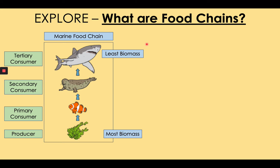So key ideas here: producer, primary consumer, secondary consumer, and tertiary consumer. You'll notice that the great white shark has nothing above it — it is the apex predator, nothing eats it. However, this is actually quite an inaccurate food chain because, in reality, something does happen to the great white shark. A real food chain looks more like this.